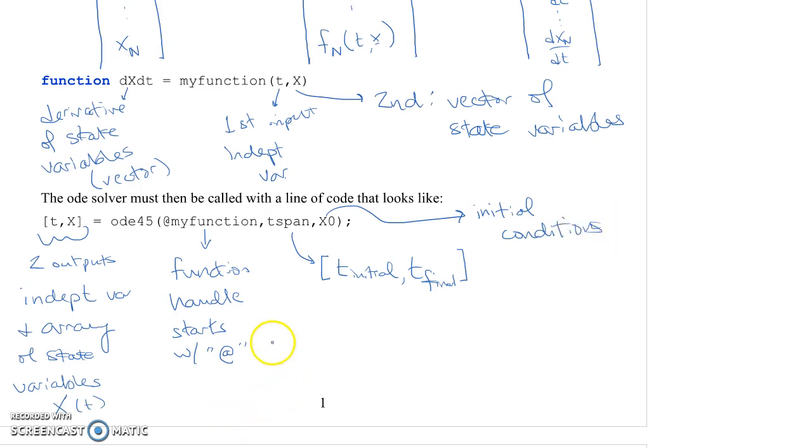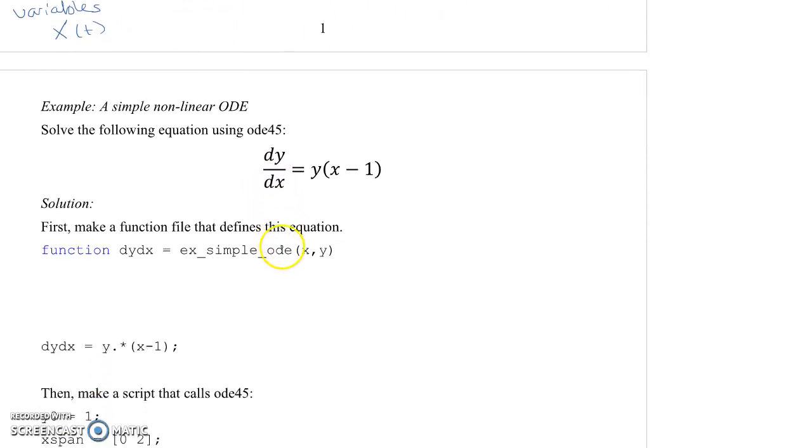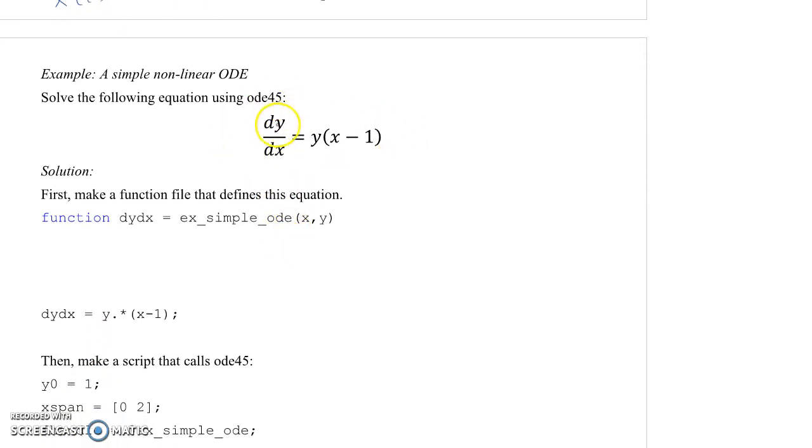Okay, so let's go ahead and take a look at a simple example of using ODE45. In this simple example, we're going to look at a nonlinear ODE of the following: dy dx equals y times the quantity X minus 1. To use ODE45 to solve this, it's going to be on the interval of 0 to 2. And your initial value, Y of 0, is equal to 1.